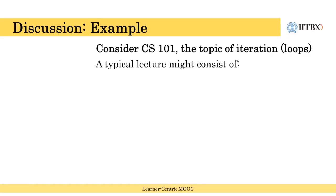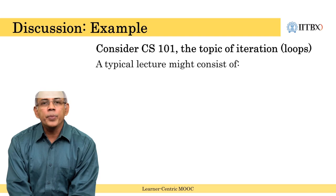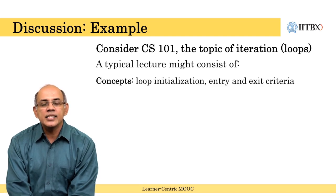As an example, let us consider a programming course CS101 wherein we are teaching the topic of iterations or loops. Now, this topic we may cover in a 1 hour or a 90 minute class. And it may include the concepts of loop initialization, entry criteria, exit criteria, and the structure of the loop.